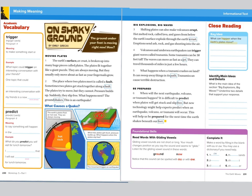So when I read, I want to look for those words and those ideas to help me answer the question. The next question is, what is the main idea of the section "Big Explosions, Big Waves"? And they want you to underline two details that support your response. So I already know that when I come to that paragraph, I'm going to look for two details that support the main idea.